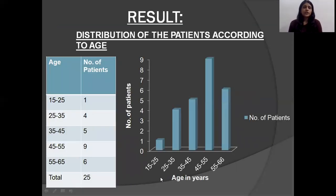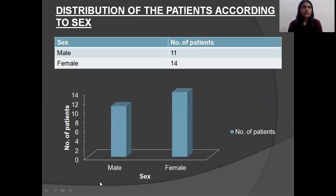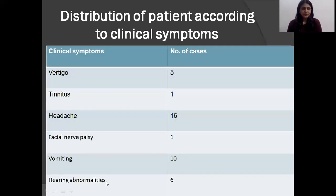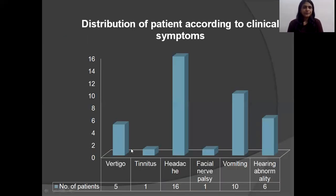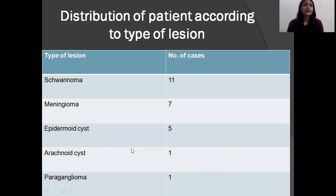The most common age group involved is 45 to 55 years; young adults aged 15 to 35 years are less commonly involved. Females are more predominant than males. Out of 25 patients, 16 showed headache as the most common clinical symptom, followed by vomiting. Regarding type of lesion, schwannoma is the most common type of CP angle lesion — 11 out of 25 patients showed schwannoma.